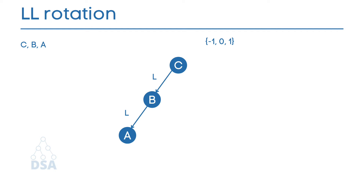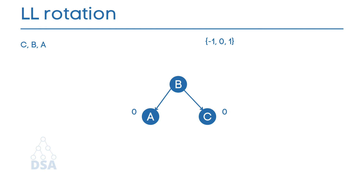Calculating the balance factors: A has no subtrees so its balance factor is 0. B has one left child (A) and no right child. The balance factor of C is 2 minus 0 equals 2, because it has 2 left child nodes and 0 right child nodes. A and B satisfy the AVL rule but C does not, so we must balance it. We perform a right rotation in a clockwise direction, pulling C down to the right. After rotation, A and C have balance factor 0, and B's balance factor is 1 minus 1 equals 0. The tree is now balanced.